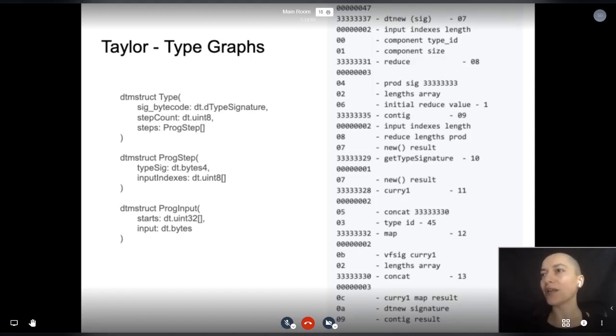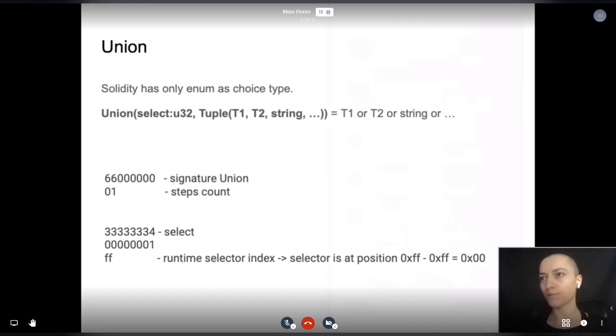On the right you can see our current n-dimensional array definition using the new, reduce, concat, get type signature query and concat native functions. This is an example of a union type definition. It only needs a selector index for the component type and the native select function.